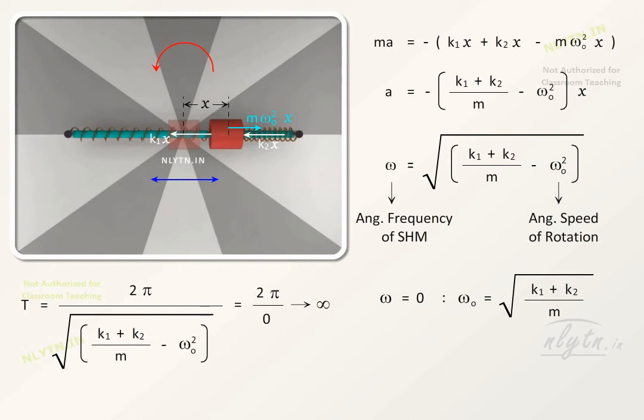Also, if omega naught is greater than this value, then the centrifugal force will exceed the force due to the springs and the block will have a radially outward acceleration.